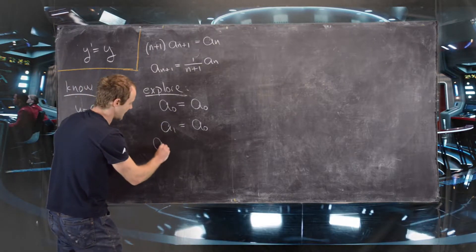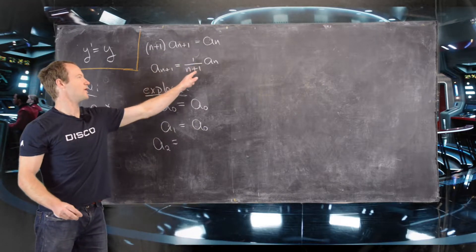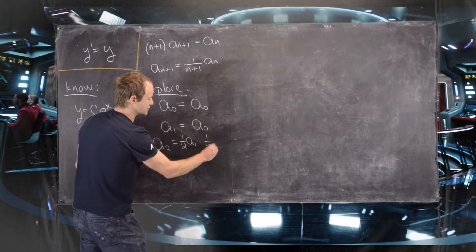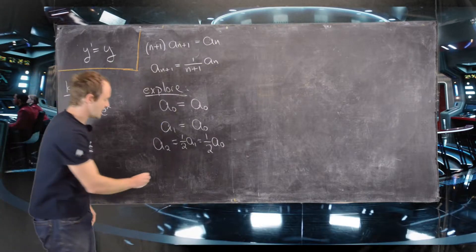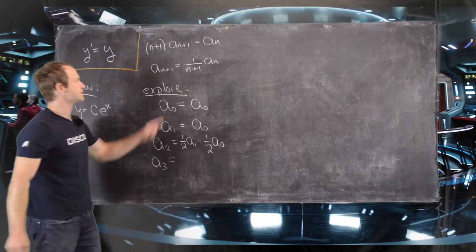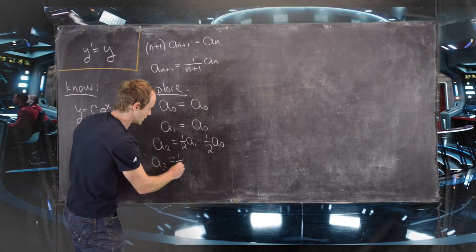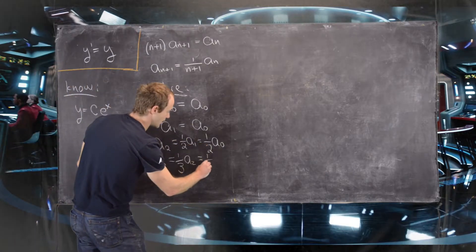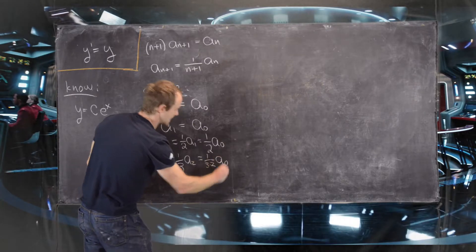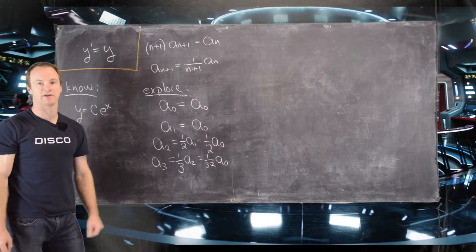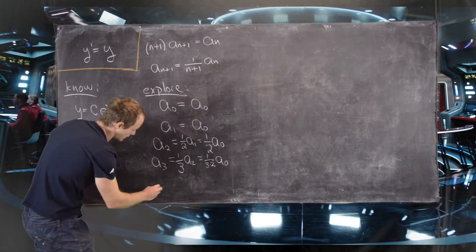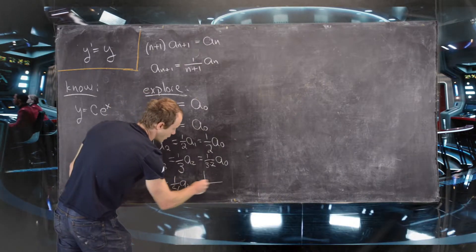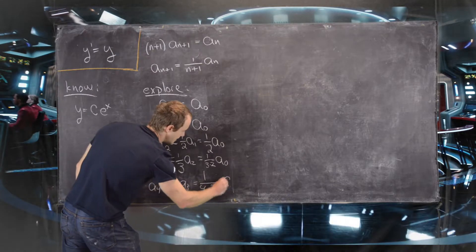Continuing: a sub 2 equals 1 over 2 times a sub 1, which is 1 over 2 times a sub 0. Then a sub 3 equals 1 over 3 times a sub 2, and since a sub 2 is 1 half times a sub 0, we get a sub 3 equals 1 over (3 times 2) times a sub 0. One more: a sub 4 equals 1 over 4 times a sub 3, which gives us 1 over (4 times 3 times 2) times a sub 0.